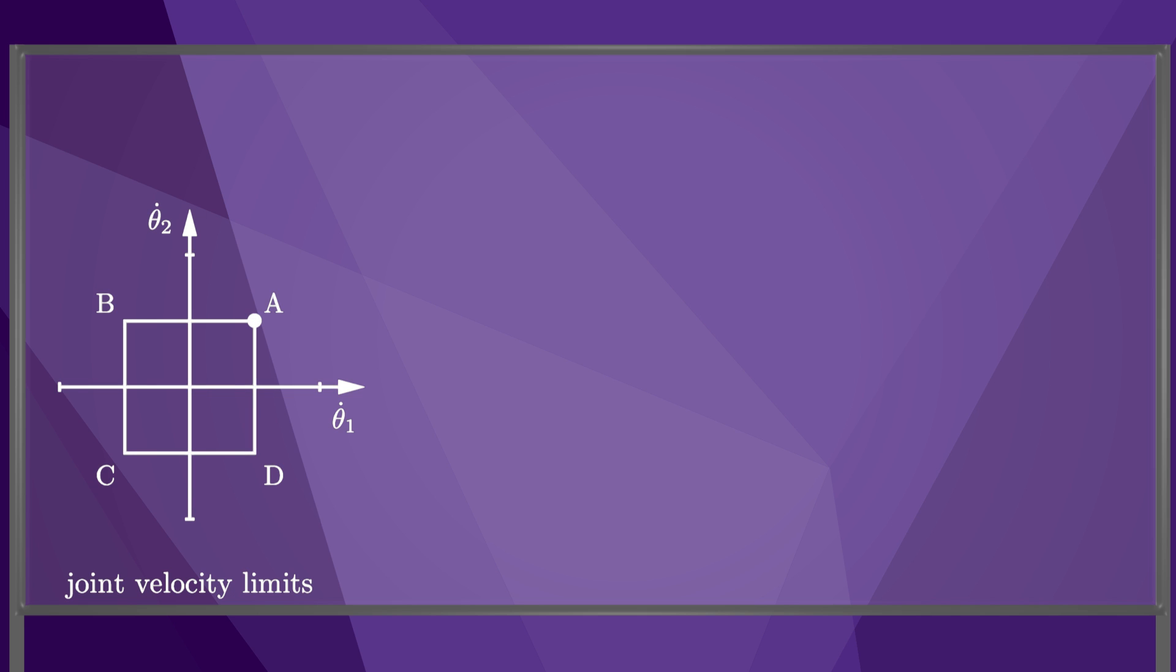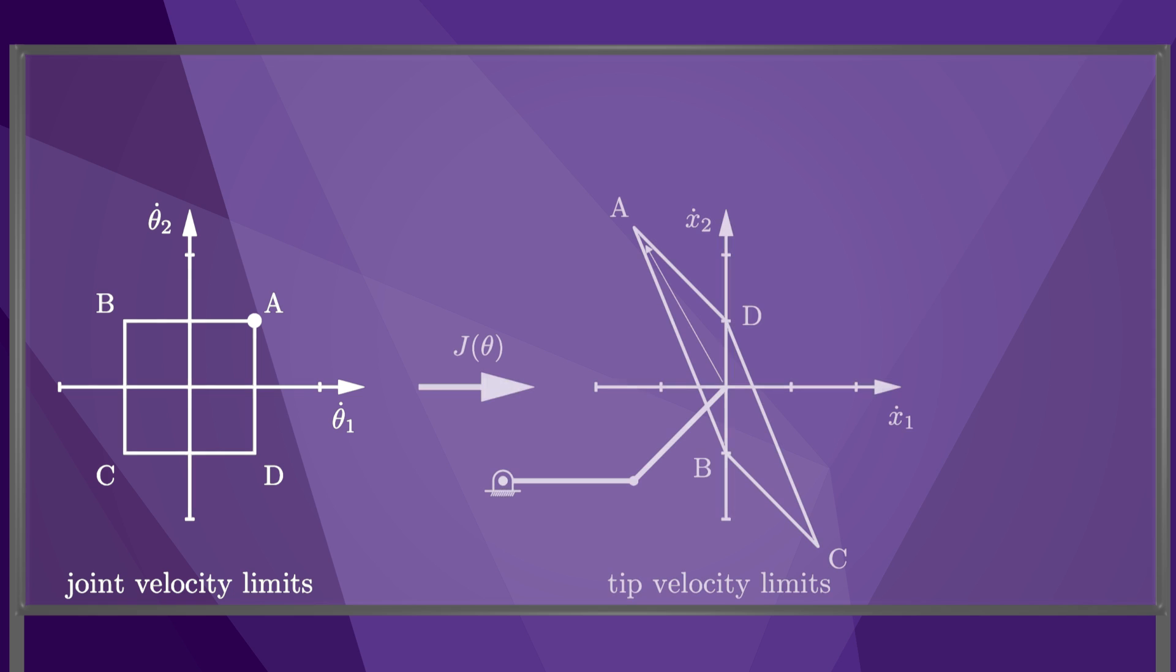The point A, for example, corresponds to simultaneous maximum positive velocity at both joints 1 and 2. We can map this square set of joint velocities through the Jacobian to get a parallelogram of possible velocities at the tip, including the tip velocity A corresponding to the joint velocity A.